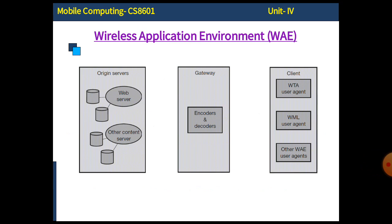The first topic in this video lecture is Wireless Application Environment. There are three objects displayed here: on the right side is the client, in the middle is the gateway, and on the left side are the origin servers. These three objects are interconnected and together show the entire Wireless Application Environment, denoted by WAE.